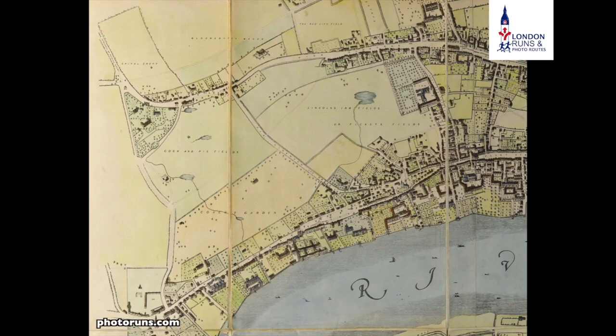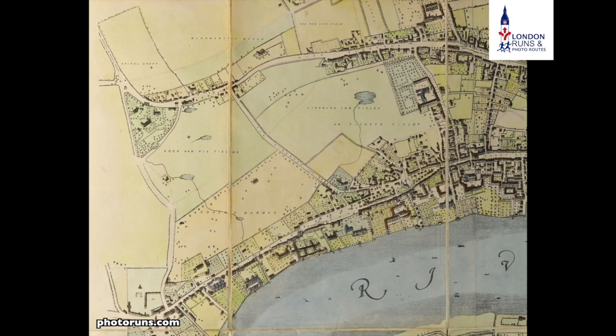That's quite clear if we have a look at this slightly later map — you can see Covent Garden is in fact just fields. That was because this was actually owned by the church. At the time of this map's creation, Henry VIII had become independent from the Catholic Church and was taking back the lands and the monies from the monastic areas around London.